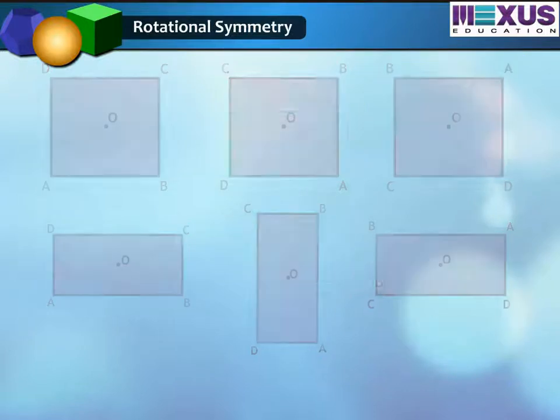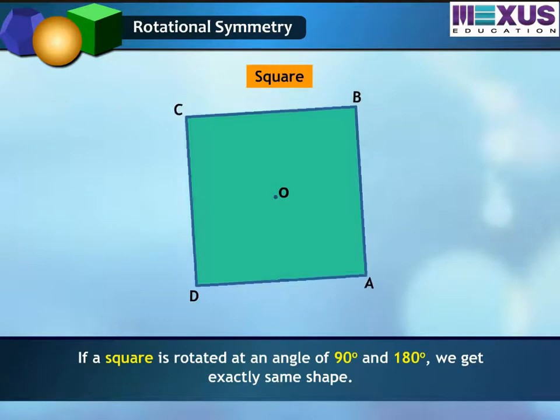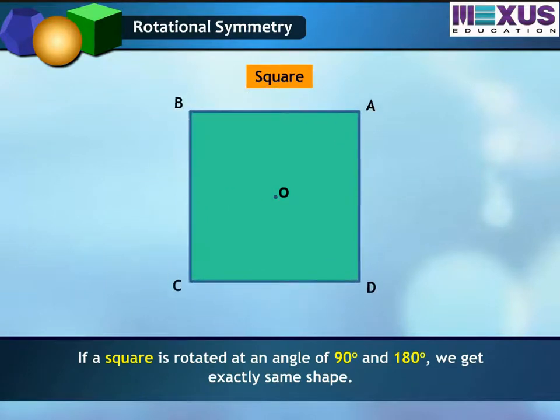Shape 1. If a square is rotated at an angle of 90 degrees or 180 degrees, we get exactly the same shape.